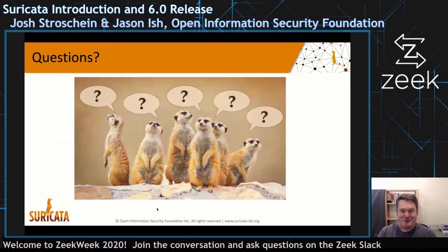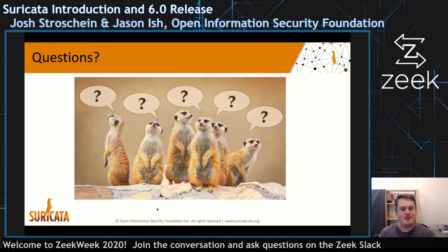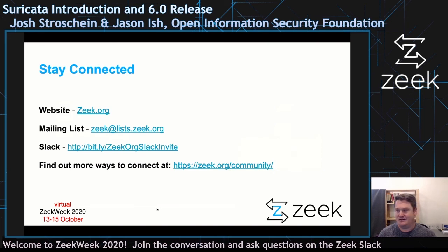You can find us on the web at suricata-ids.org. Our community forum is at forum.suricata.io, linked from the main website. For any questions, I'll be in the Zeek Slack for the rest of the day and most of tomorrow. You can reach me at Jasonish. And that concludes this talk — thank you.